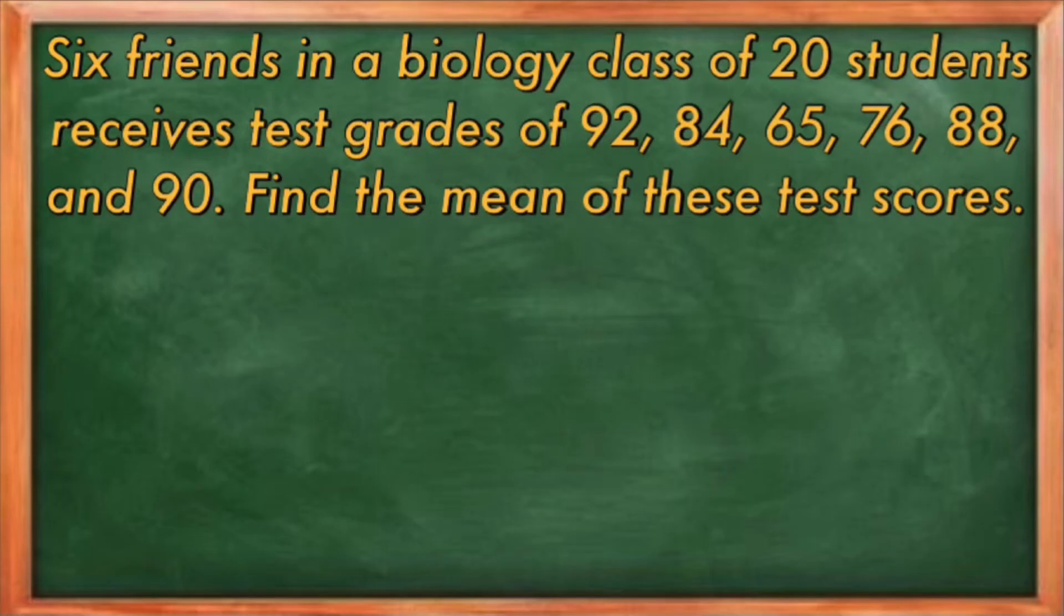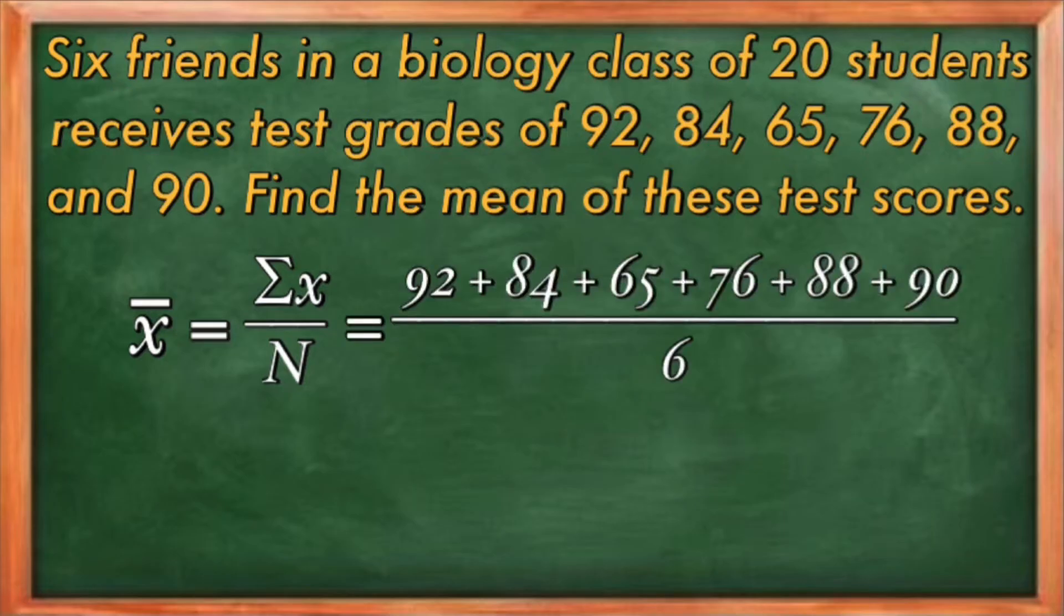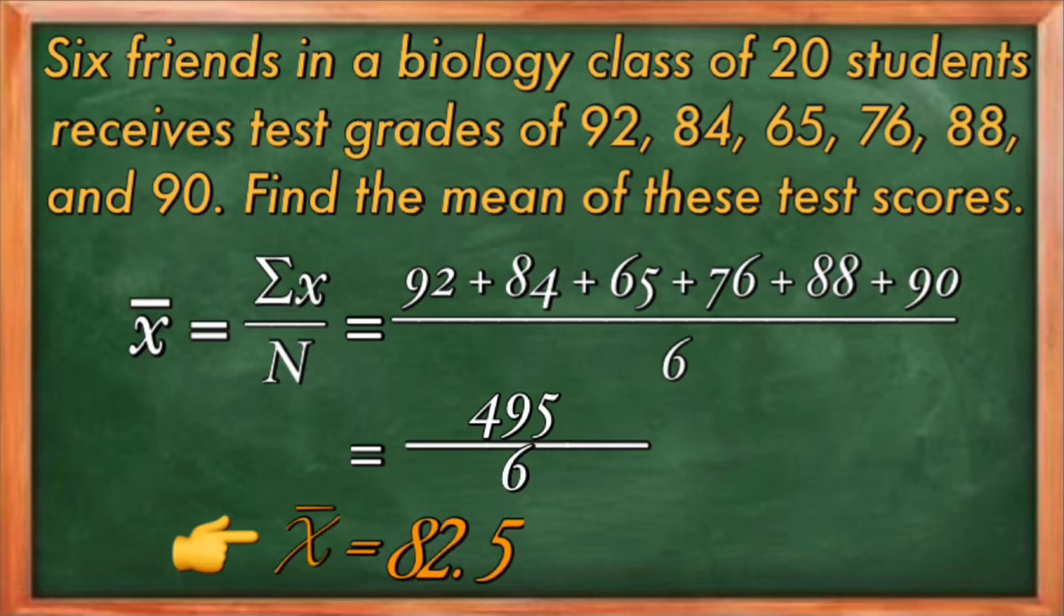First, using the formula mean equals the summation of x over n, get the sum of their scores. So we have 92 plus 84 plus 65 plus 76 plus 88 plus 90 divided by 6. Why 6? Because there are six scores. Adding them, we have 495 divided by 6, which equals 82.5.